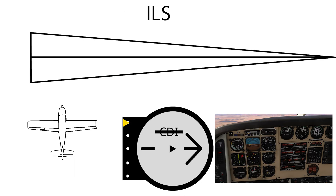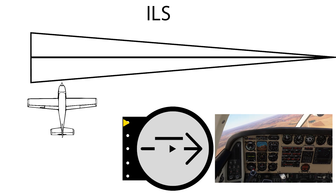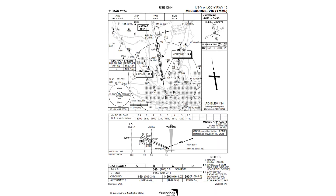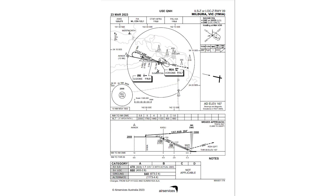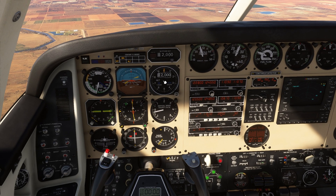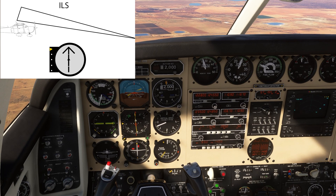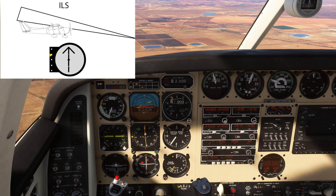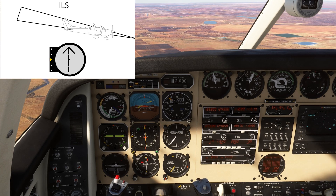Then fly towards the CDI until it starts moving, and when it starts moving you turn to intercept it. However, for the glide slope it is very subjective. Usually a glide path is intercepted at 3,000 feet and has a 3 degree glide path, but I recommend you check your ILS charts for the airport that you are flying to because it can change a lot. For example, this glide slope I am flying is intercepted at 2,000 feet. Once you have the glide slope coming down towards the middle, you want to start a shallow descent, which for most general aviation aircraft is about 500 to 700 feet per minute.